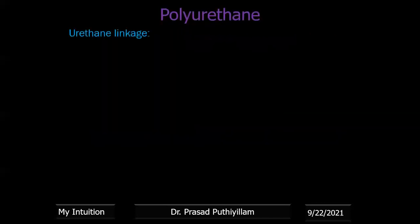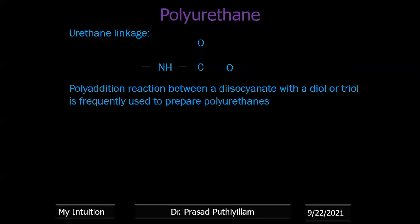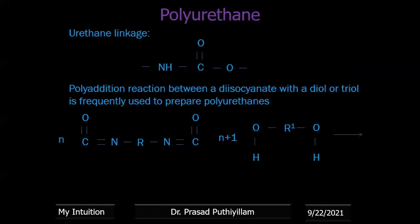Polyurethanes contain the urethane linkage –NHCOO–. If this linkage is present in the polymer, we call it a polyurethane. It is prepared by a polyaddition reaction — one molecule is added to the other with no byproducts — between a diisocyanate and a diol. If a diol is used, a linear polymer results; if a triol is used, a cross-linked one is obtained. Diisocyanate contains the isocyanate group –NCO.